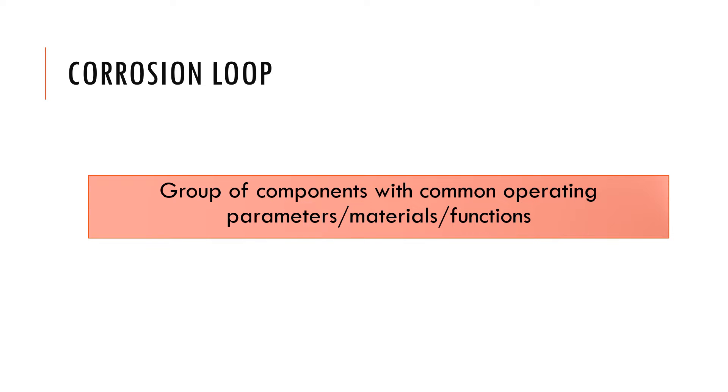A corrosion loop is usually defined as a group of components which may have common operating parameters, or they may be made of similar or same materials, or they may be involved in similar functions in a particular process.